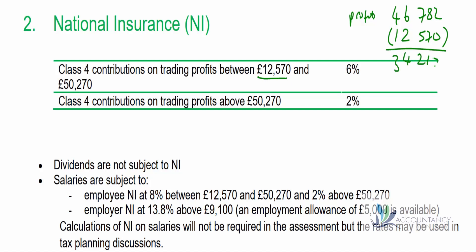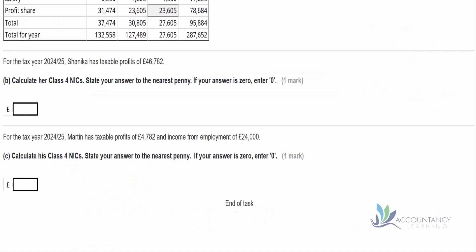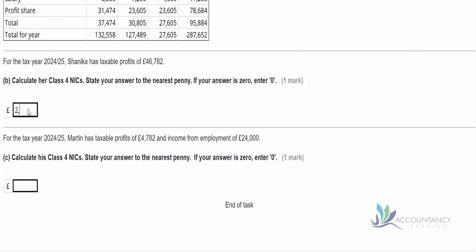Up to £50,270, we pay national insurance at a rate of 6%. Multiplying £34,212 by 6% gives us £2,052.72. We don't have income above £50,270, so we don't need to worry about the extra 2%. Our final answer is £2,052.72.